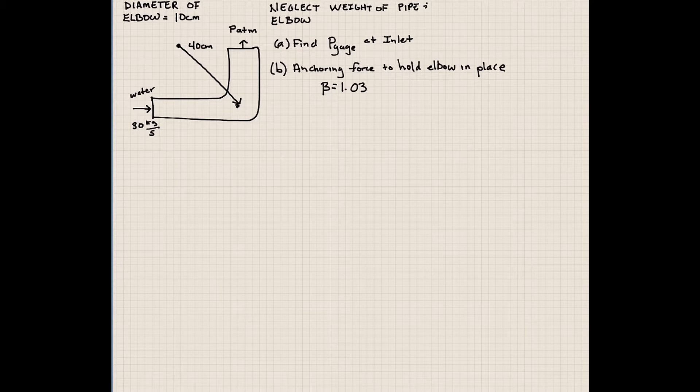What type of bolt would you need to hold this setup in place? Here we have water flowing through a pipe, a 90 degree elbow at 30 kilograms per second. That's a pretty substantial amount of water flowing through here. There's a vertical distance between the inlet and the exit of 40 centimeters.